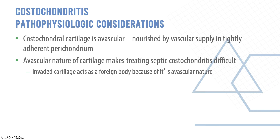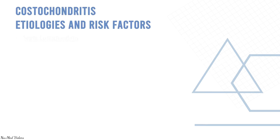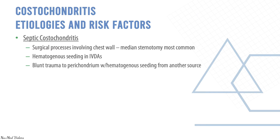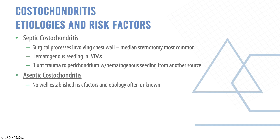Septic costochondritis is usually caused by surgical processes involving the chest wall, such as a median sternotomy — the most common cause — or hematogenous seeding in IV drug abusers. Blunt trauma to the perichondrium can also result in seeding from another source. Aseptic costochondritis has no established risk factors and the etiology is unknown.